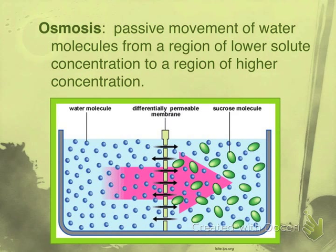Next we need to discuss osmosis. Osmosis follows similar rules to diffusion, but in this case it is the passive movement of water molecules specifically — where diffusion can refer to any molecule. Osmosis is the passive movement, so no energy required, of water molecules from a region of lower solute concentration to a region of higher solute concentration. A solute is something dissolved in water — in this case, a sucrose molecule dissolved in water, where sucrose is a type of sugar.